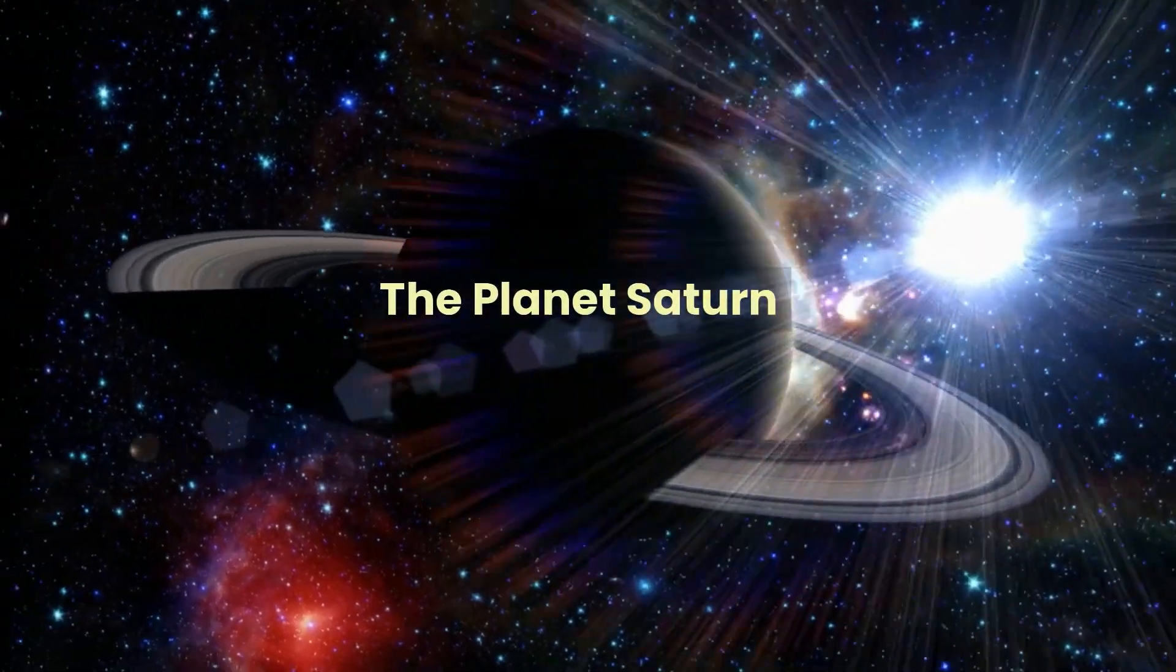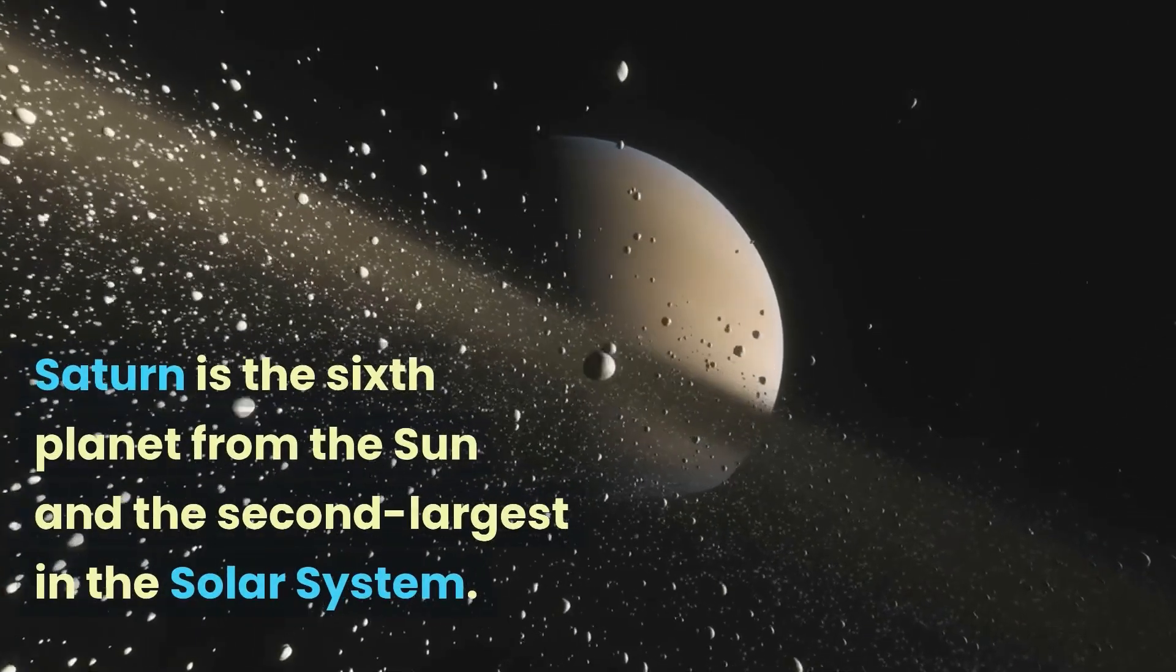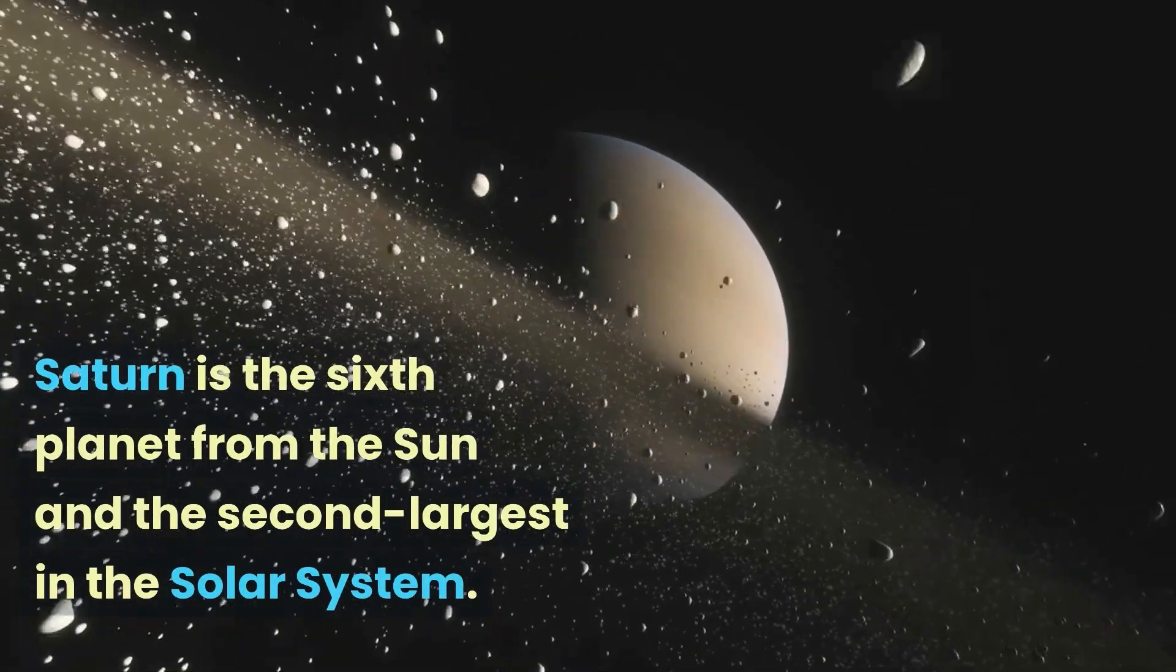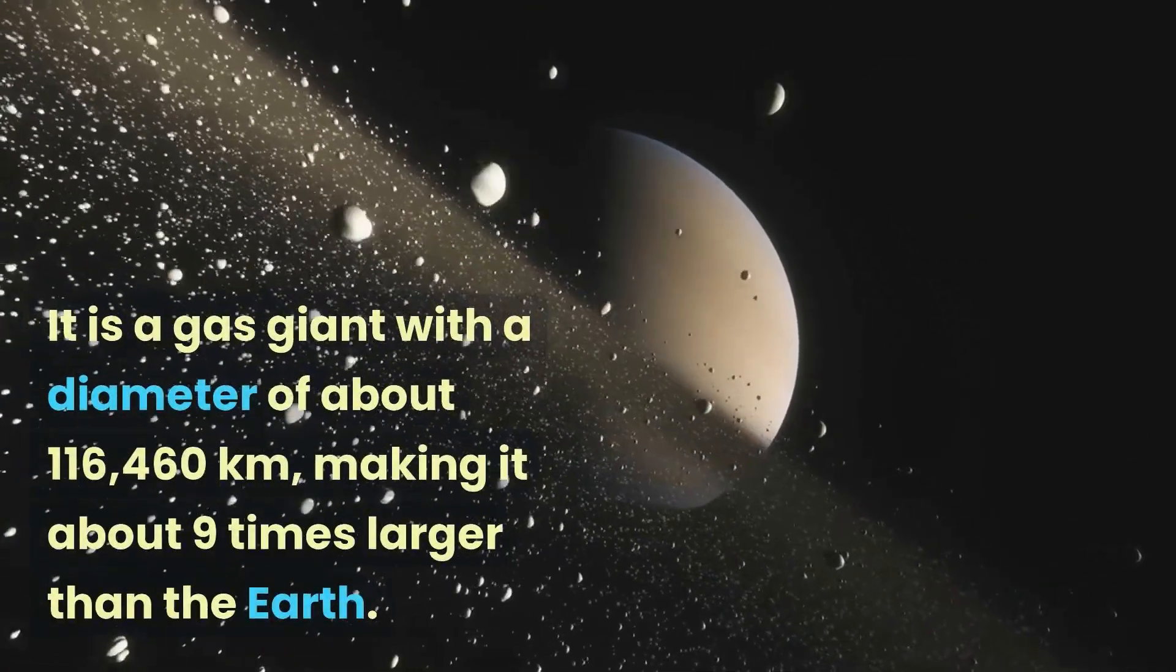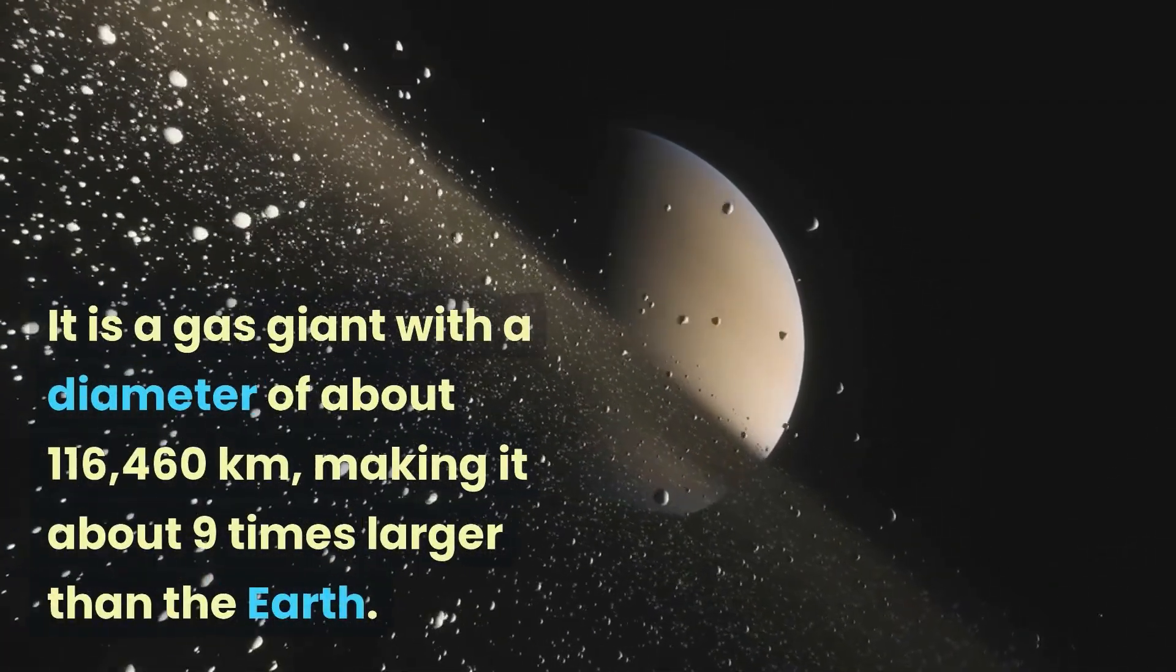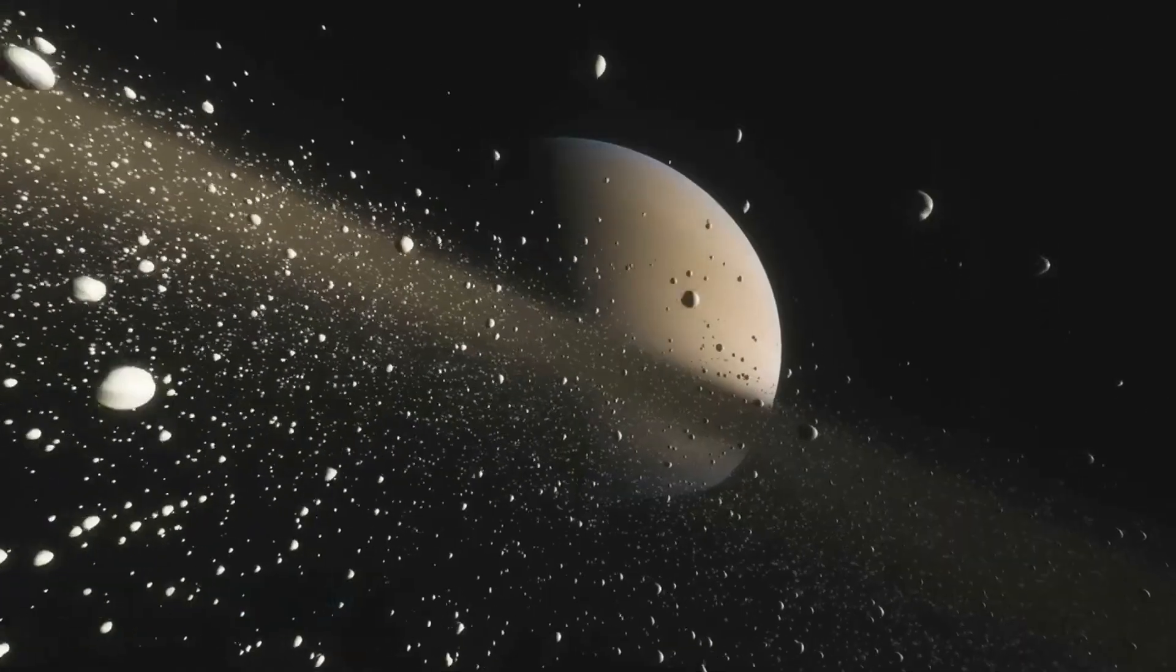The planet Saturn. Saturn is the sixth planet from the Sun and the second largest in the solar system. It is a gas giant with a diameter of about 116,460 kilometers, making it about nine times larger than the Earth.